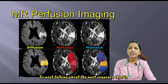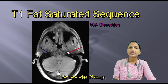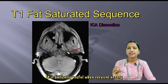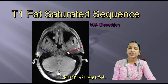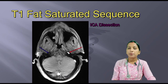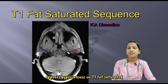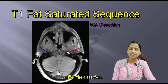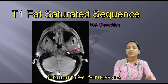Talking about fat-saturated T1 images: this sequence is useful when cervical artery dissection is suspected. The intramural blood appears hyper-intense on T1 fat-saturated images, typically within 2 to 3 days after the dissection.